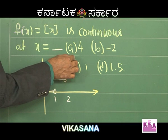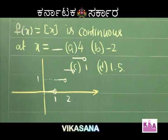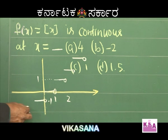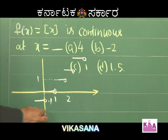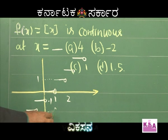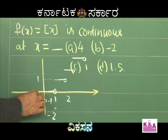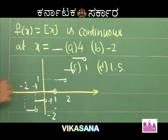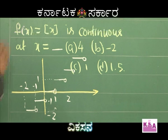Between 3 and 4 it is 3, between 4 and 5 it is 4. Similarly, between minus 1 and 0 it is minus 1, and between minus 2 and minus 1 it is minus 2.